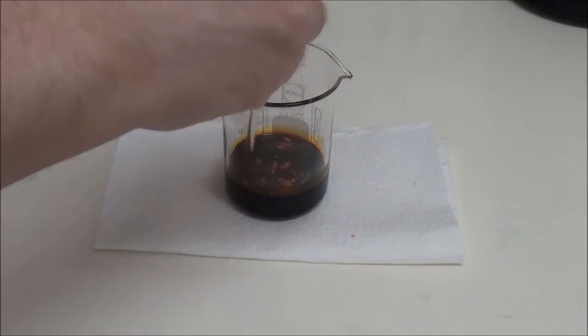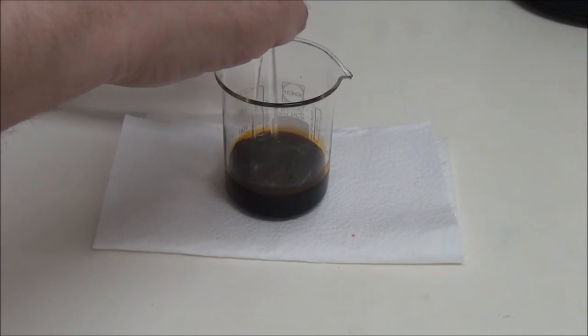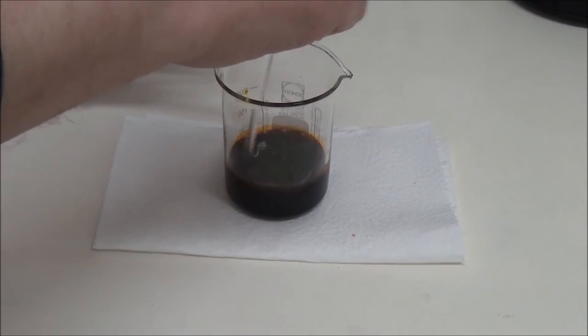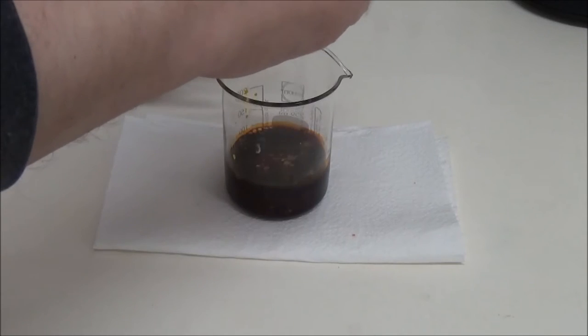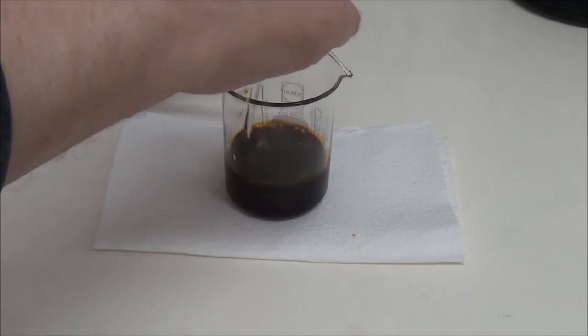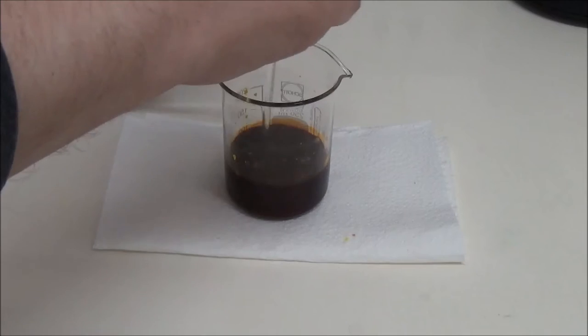Dilute sulfuric acid is then added in portions to the filtrate. A yellow precipitate separates out, which initially dissolves again and again with stirring until the color of the entire solution changes permanently. The sulfuric acid liberates the fluorescein from its sodium salt.